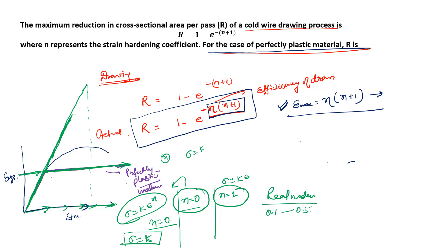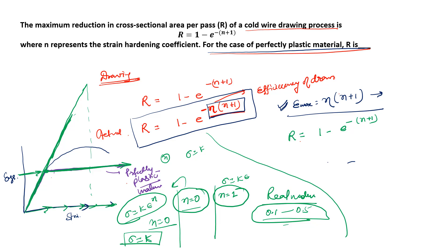Now coming to the question: r = 1 - e^(-(n+1)). For a perfectly plastic material, n = 0, so r = 1 - e^(-(0+1)) = 1 - 1/e = (e-1)/e. Calculate this value and you will get the answer. Hope this helps — thank you!